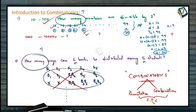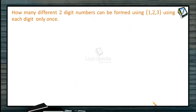The fundamental principles of counting help us define what a permutation is, how many permutations exist, what a combination is, and how many combinations are possible. Let us begin with a simple question: how many different two-digit numbers can be formed using 1, 2, and 3, using each digit only once — without repeating any digit?